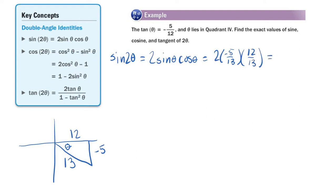Now, if we multiply that through, 2 times negative 5 is negative 10, times 12, that is negative 120. 13 times 13 is 169. And so, sine of 2 theta is negative 120 over 169. Not too bad.